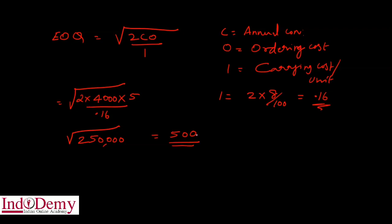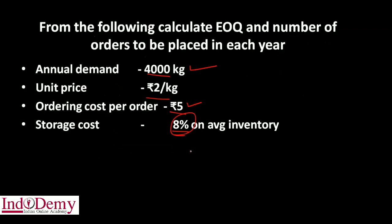The best quantity to be ordered is 500 kg. Now, number of orders to be placed in a year equals annual consumption